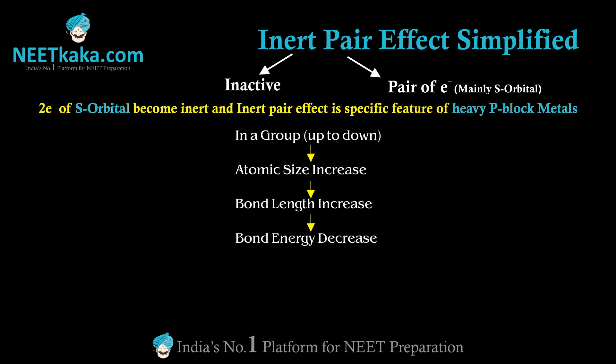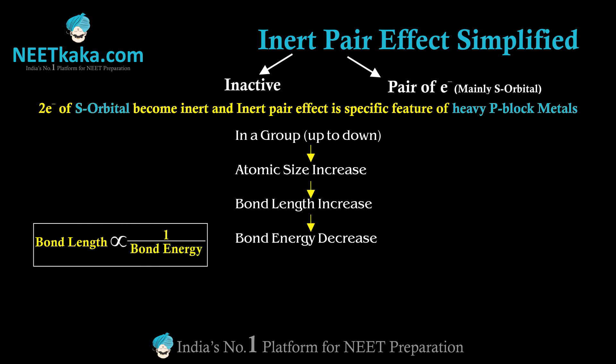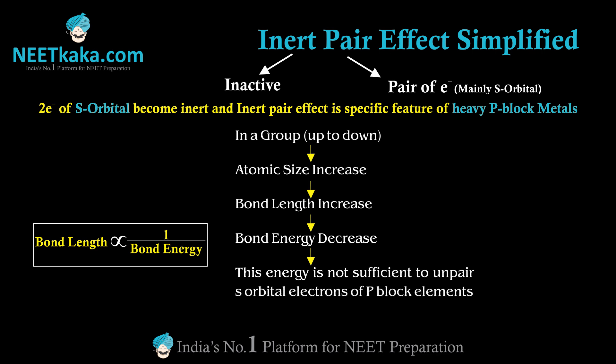When bond length increases, the energy released is lesser, because bond energy and bond length are inversely related to each other. If the energy is lesser, it is not sufficient to unpair the electrons of the s orbital. So if these electrons are not unpaired, they will not participate in bonding — this is known as the inert pair effect.